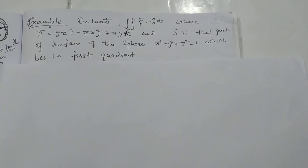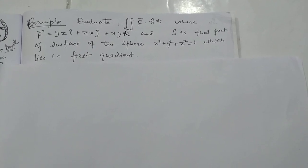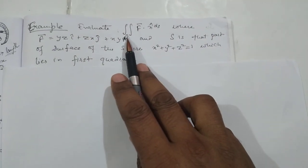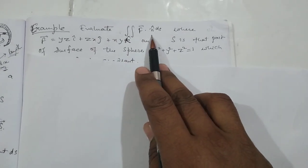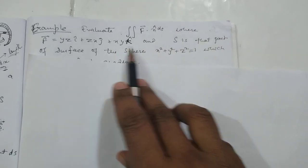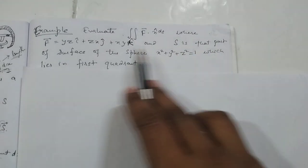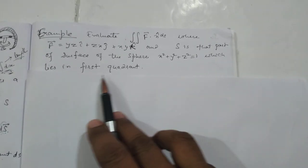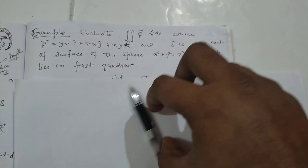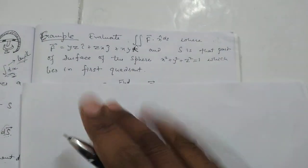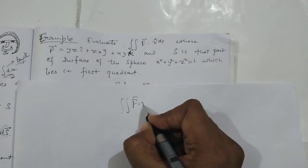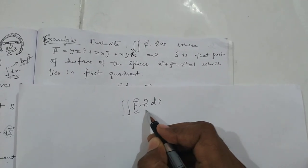Hello students, hello friends, welcome back. In continuation of the previous video, we are going to solve a problem based on surface integral. The problem is: evaluate the integral ∫∫ F·n̂ dS, where F is given, and S is the surface of the unit sphere x² + y² + z² = 1, lying in the first octant/first quadrant.